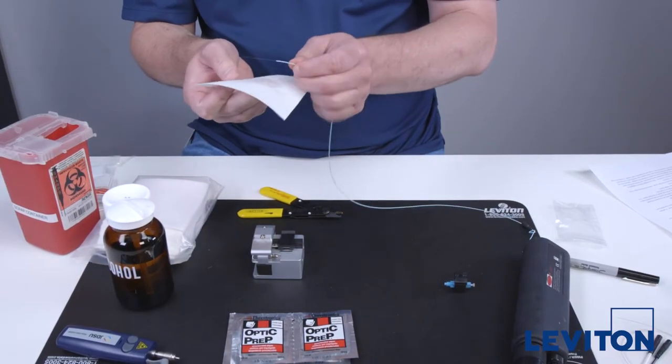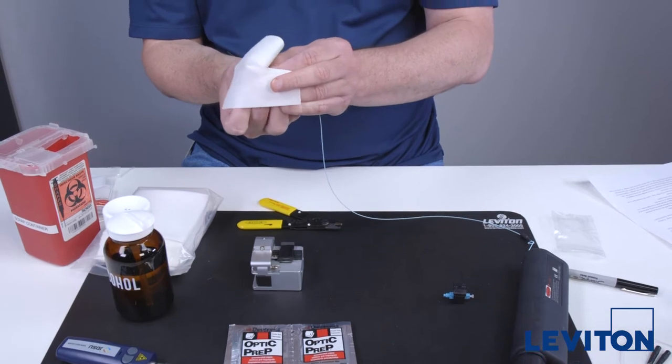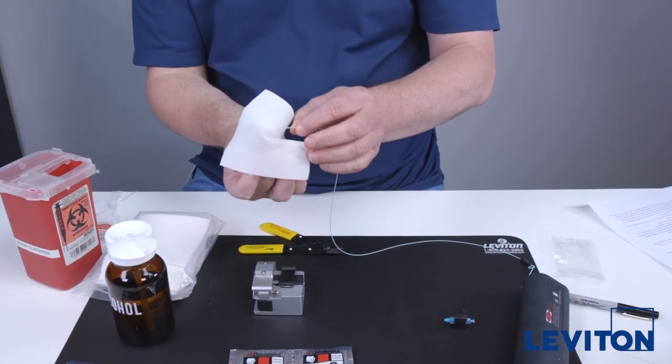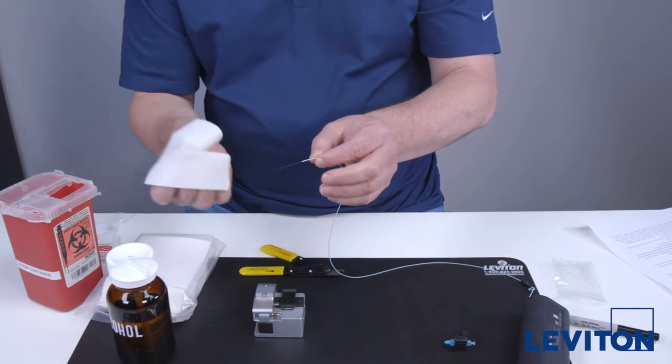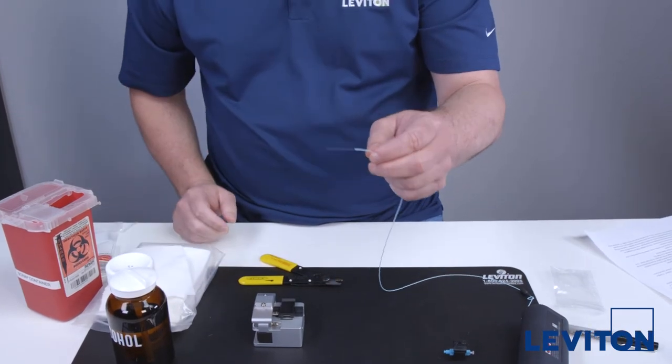Clean the bare fiber with an alcohol wipe to remove any debris. You will hear a squeak when cleaning. If no squeak is heard, recheck the fiber to ensure the acrylite coating has been removed.